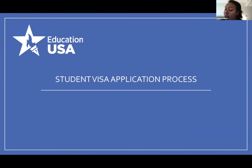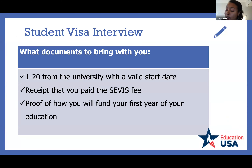Let's begin with the student visa application process. There are more than 4,000 higher education institutions in the U.S. Students can apply for an F or M visa. Each student must be enrolled in the Student and Exchange Visitor Program (SEVP) and must pay the service fee before obtaining a visa. Please visit www.ice.gov for more information.